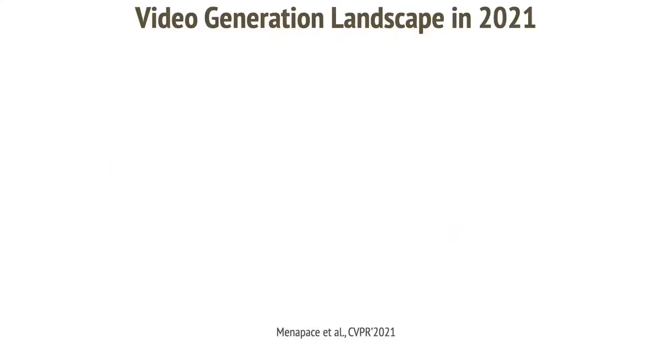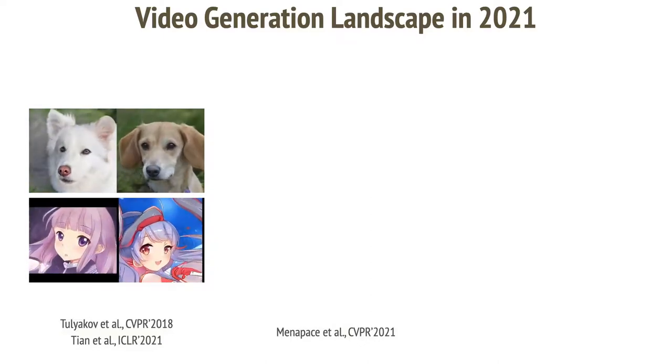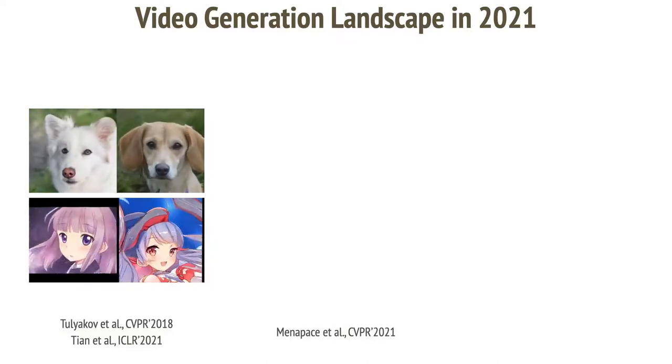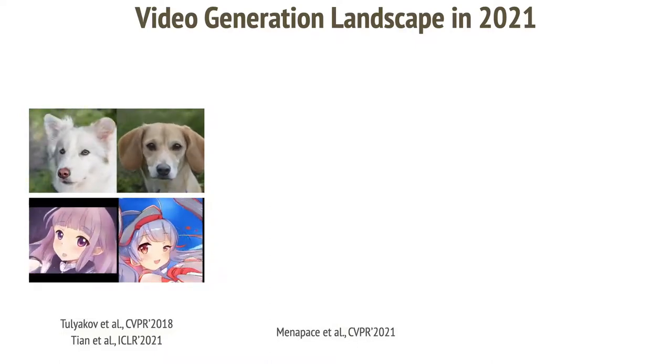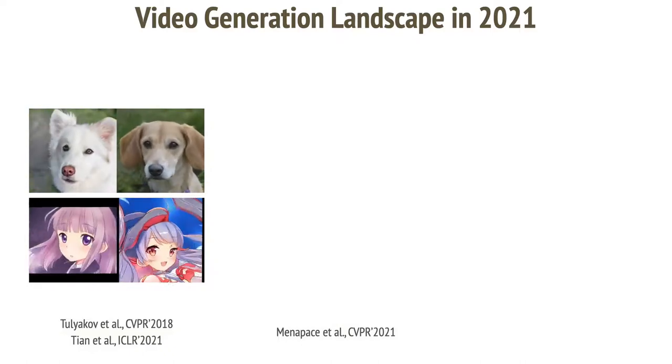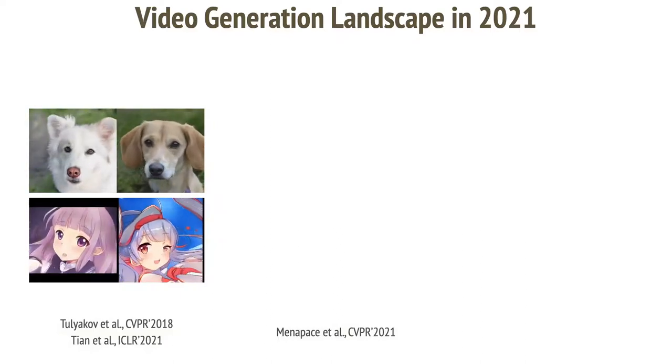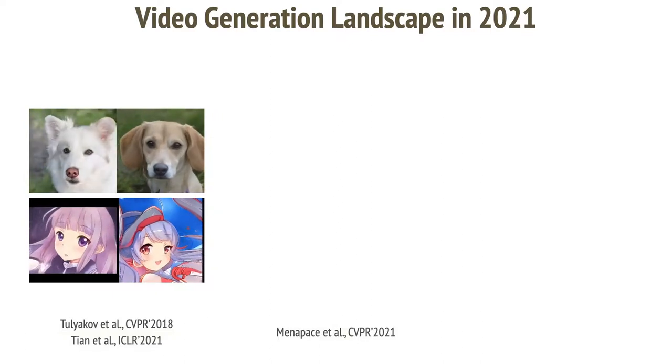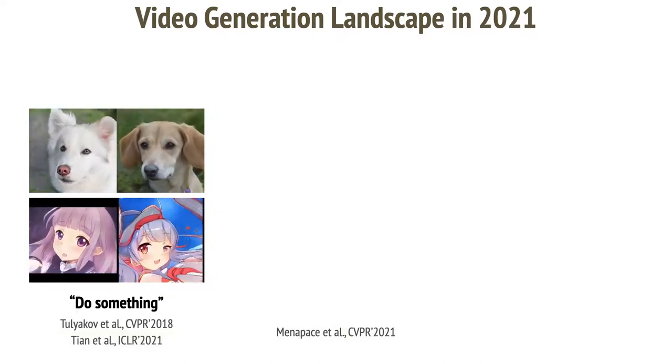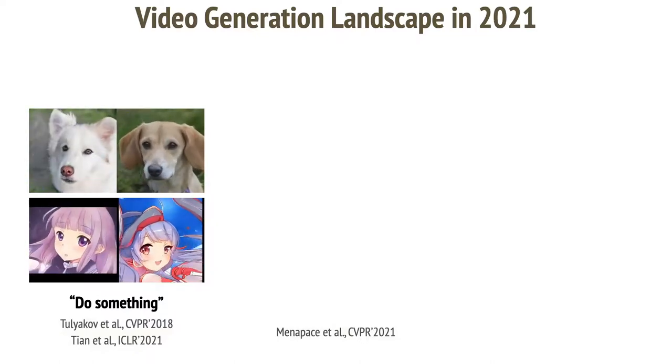All right, we've seen two works that generate videos from noise. Both of them use a disentangle representation. This allows the user to have some form of control over the result. They can switch content, sample different motion. There is no, however, any semantics behind what is being generated. Two different motion trajectories will generate two different videos. What will be different, we don't know. We therefore call such methods, do something approaches, as they will generate something and we don't know what.